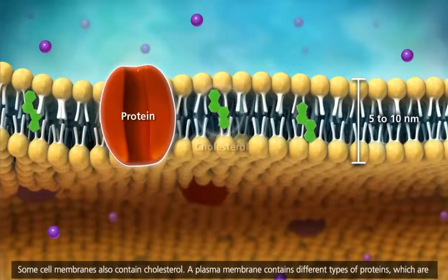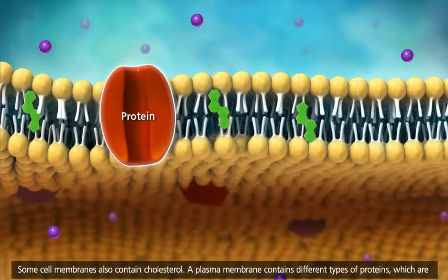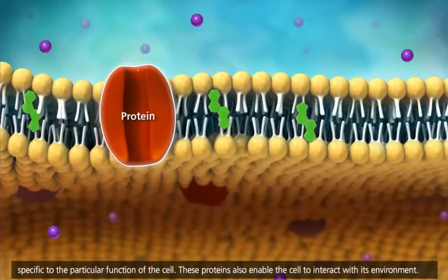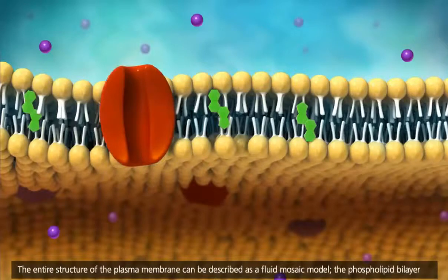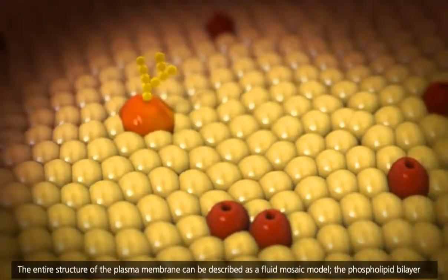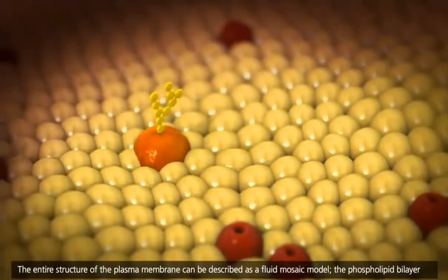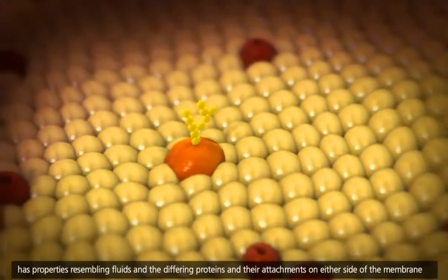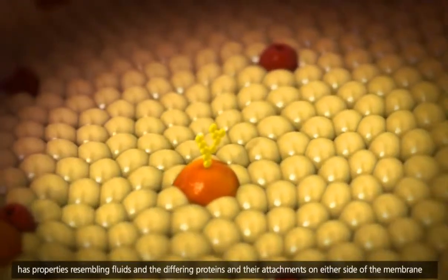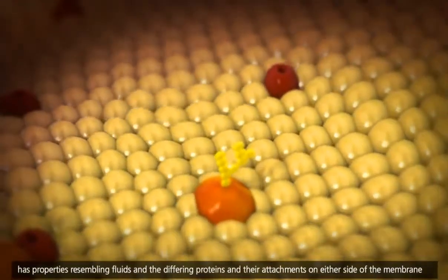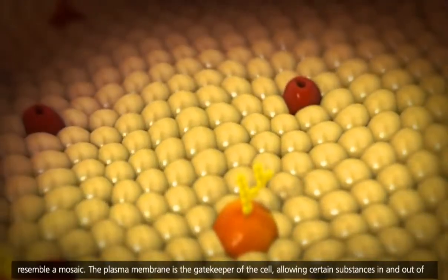Some cell membranes also contain cholesterol. A plasma membrane contains different types of proteins which are specific to the particular function of the cell. These proteins also enable the cell to interact with its environment. The entire structure of the plasma membrane can be described as a fluid mosaic model. The phospholipid bilayer has properties resembling fluids, and the differing proteins and their attachments on either side of the membrane resemble a mosaic.